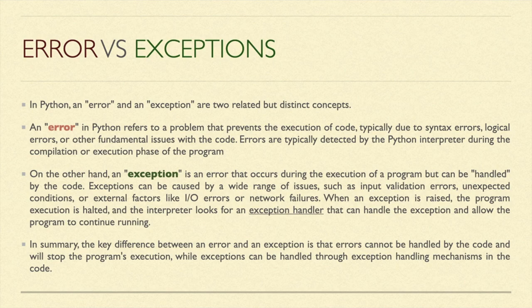For example, if your Python code is interacting with input devices such as a camera or something else, and there are issues with connectivity or logical issues between the devices and your Python code, those errors cannot be handled by the Python code — and these are known as errors. Errors are typically detected by the Python interpreter during the compilation or execution phase of the program.